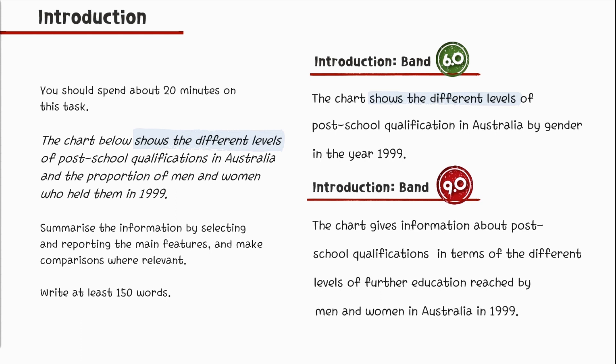In the first example, the writer used the same words from the heading and an important piece of information is missing. The writer copied the word 'shows' and the phrase 'different levels,' and the introduction lacks the information about who held the qualifications. The band 9 introduction reads: 'The chart gives information about post-school qualification in terms of the different levels of further education reached by men and women in Australia in 1999.'